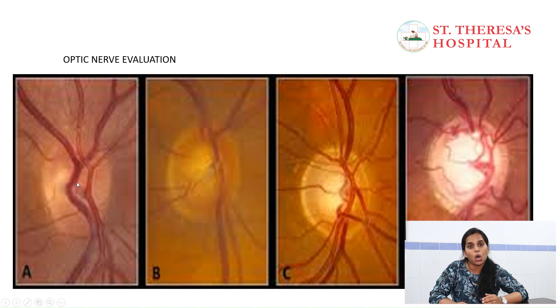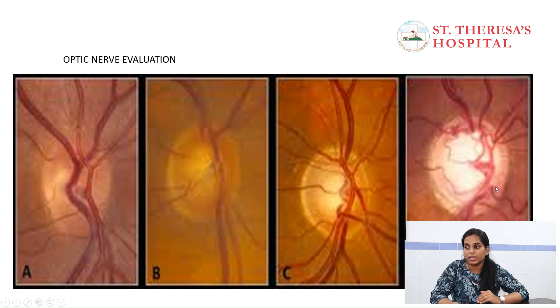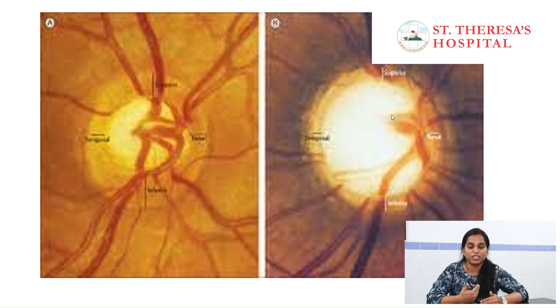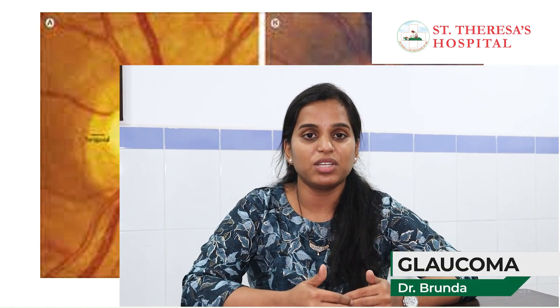Looking at images: the first image shows a normal optic nerve. A normal patient has a healthy nerve. But as glaucoma progresses, it becomes pale and white — this is moderate to advanced level. In the advanced stage, there is a wide cupped pale eye. Glaucoma causes optic atrophy — the nerve is damaged. At this stage, vision is lost, and the patient experiences pain and symptoms.